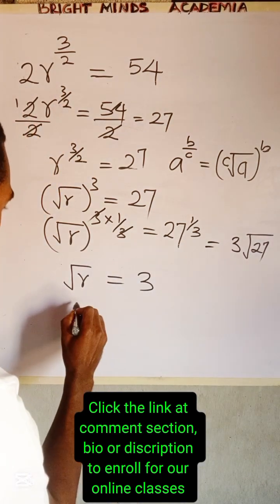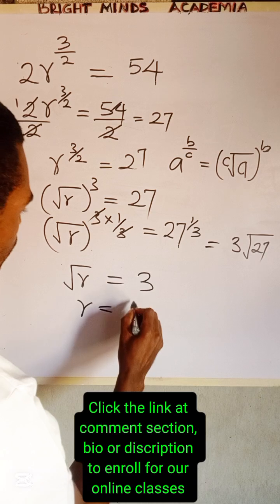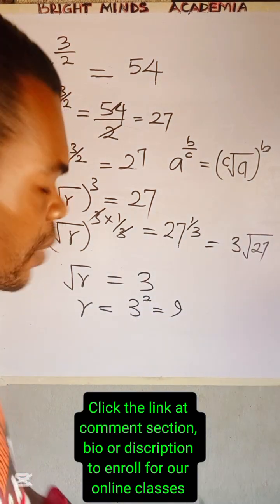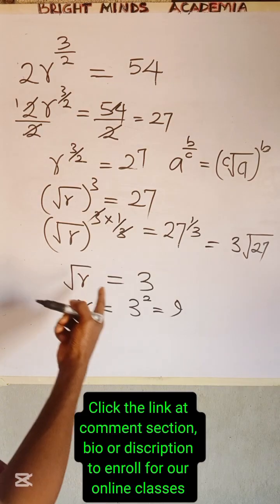So squaring both sides, we're going to have r equal to 3 squared which is equal to 9. Now we're squaring both sides so that we're able to remove the square root sign.